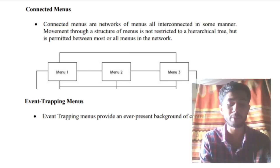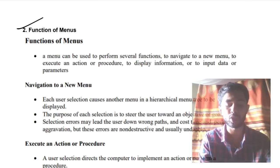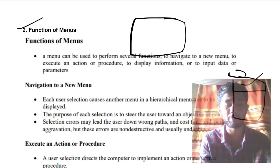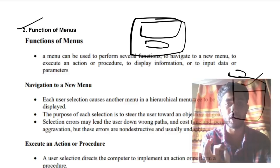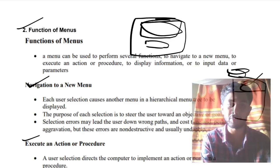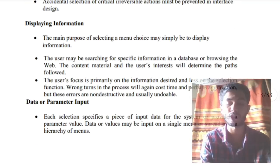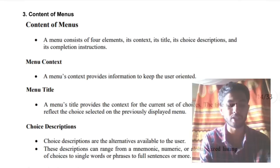Since we know the different types of menus, it's very important to know what are the different functions of menus — a super important exam question. There are four functions of menus: navigation to a new menu, execution of an action or procedure, display of information, and data or parameter input. When you click a menu, some options appear; you execute an action, it shows information, and you input data — those are the four functions.